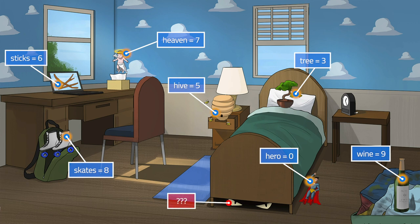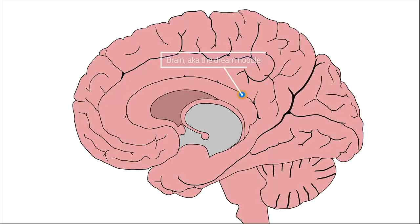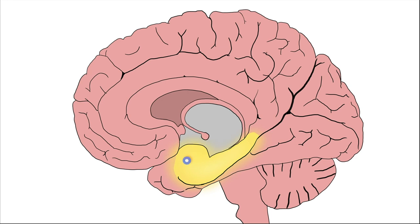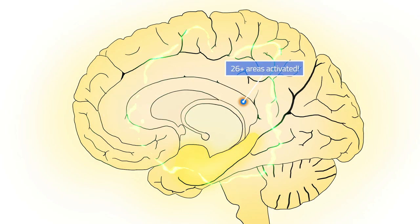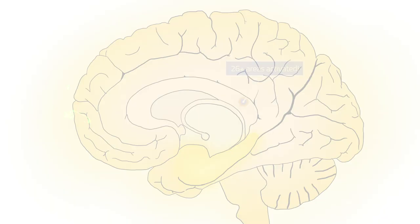With the marvels of modern science, we can see what parts of the brain are activated when we recall information. With verbal memory, only one part of the brain is activated — underwhelming, to say the least. But when your visual spatial memory comes into play, your brain lights up like a Christmas tree.